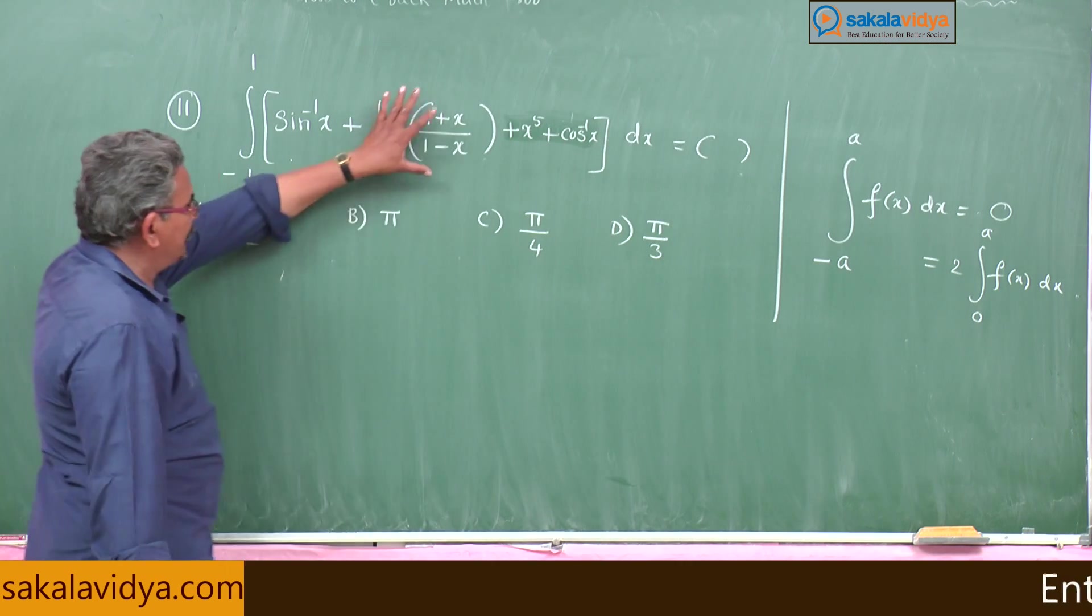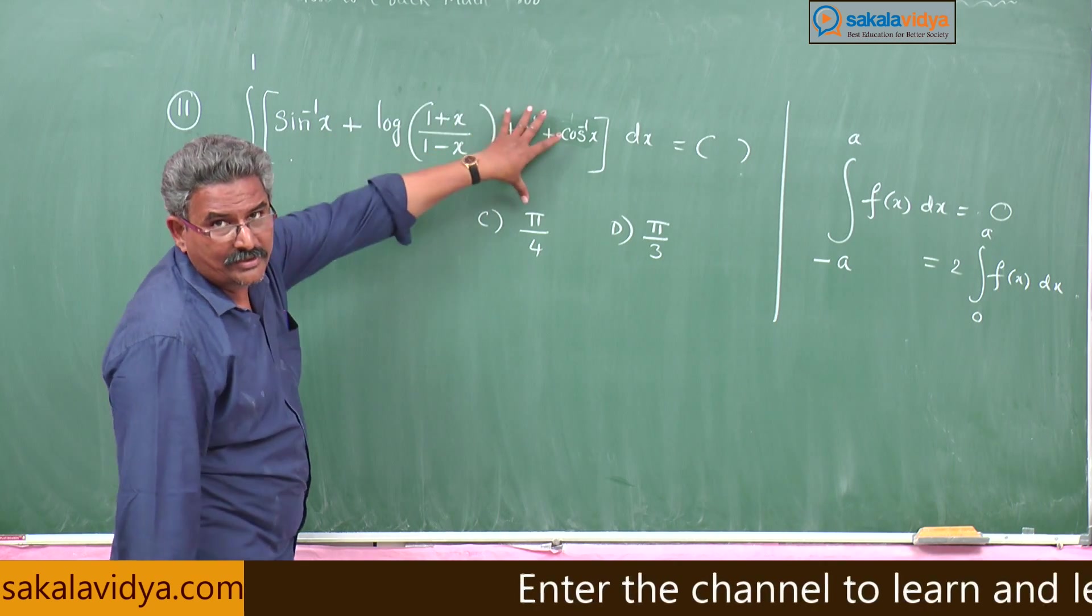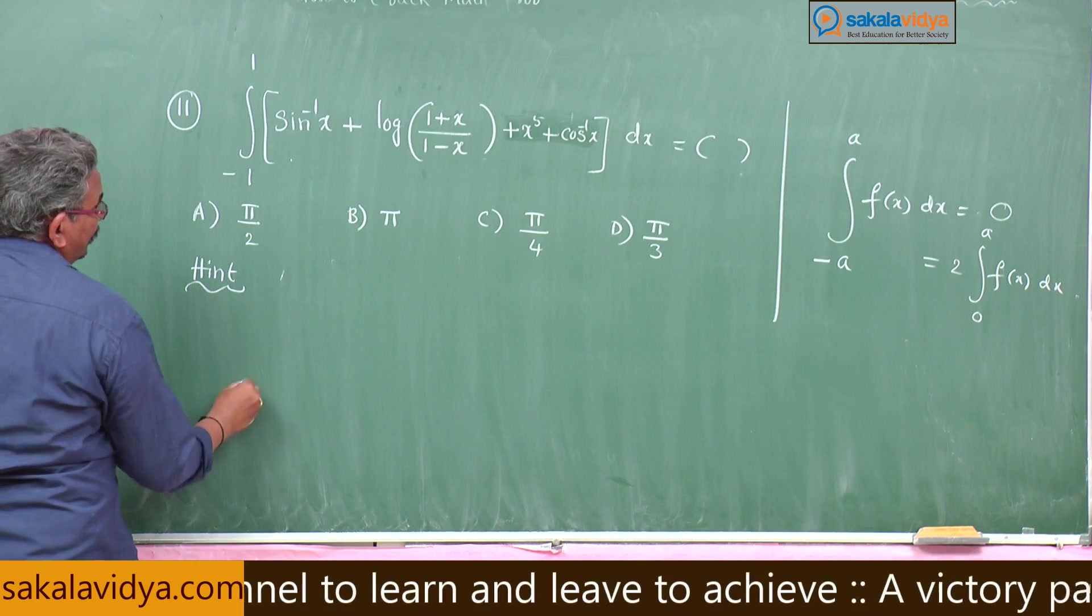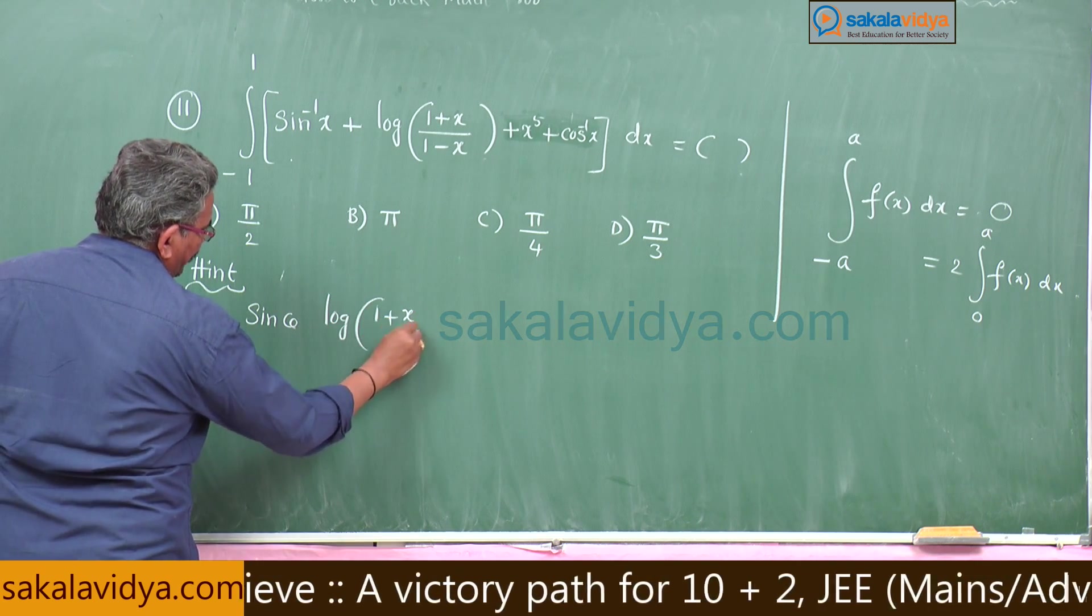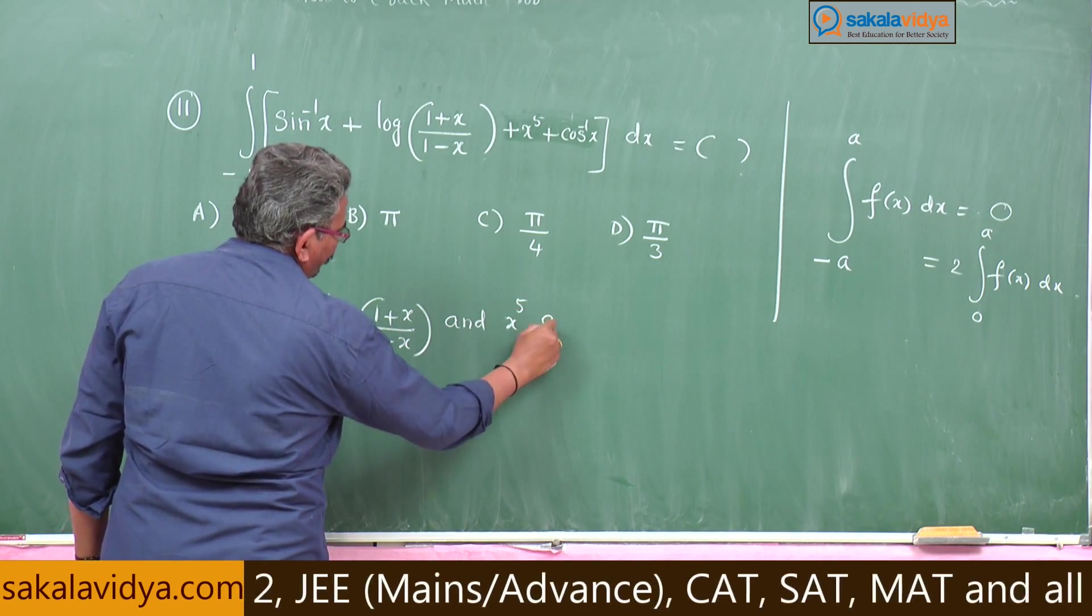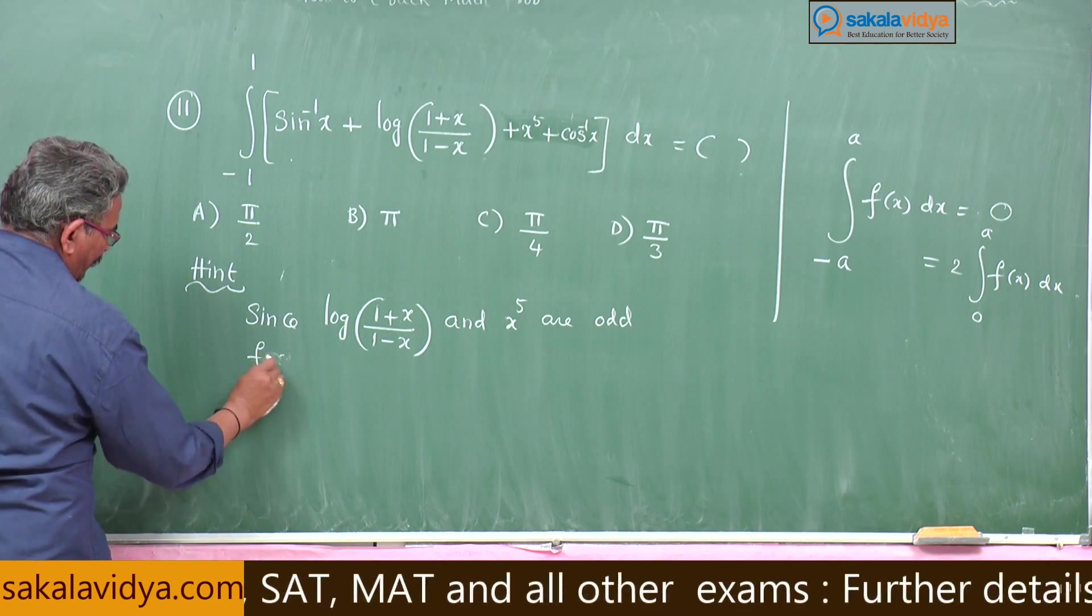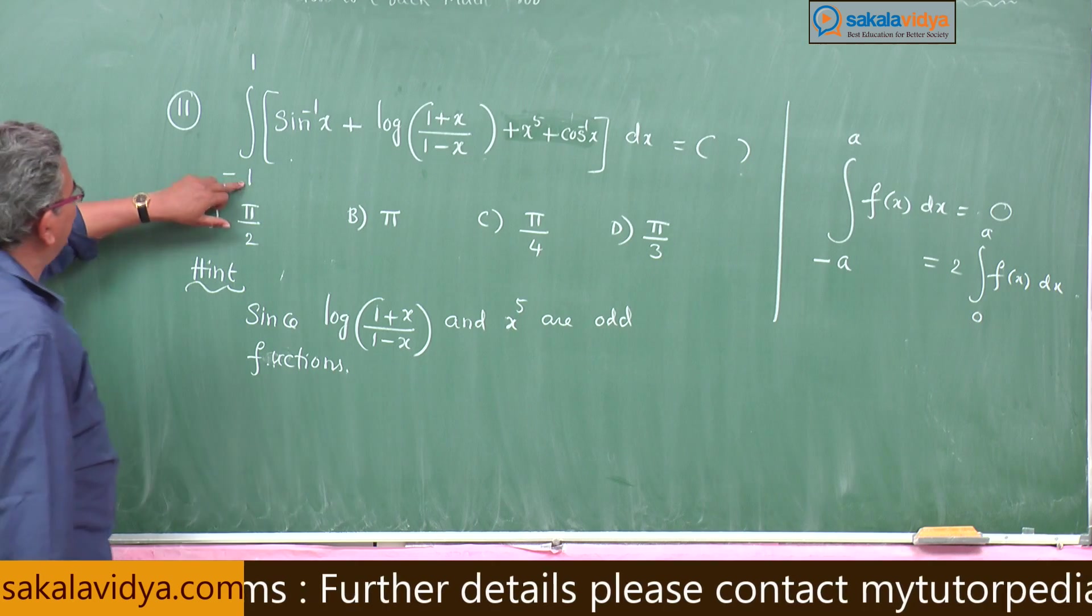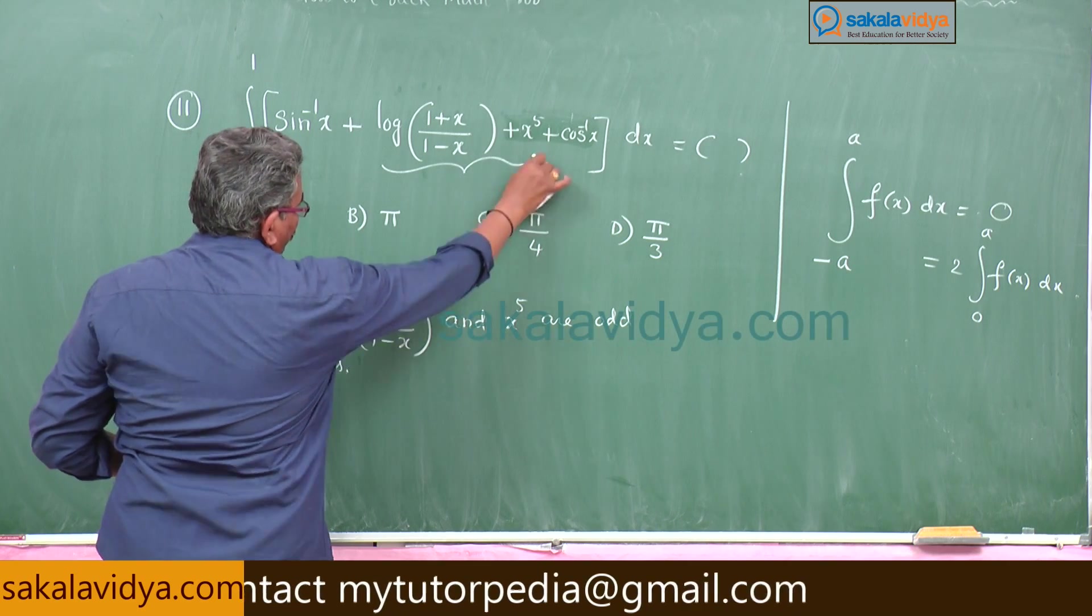Now check these. Log of (1+x)/(1-x) becomes odd function, x to the power of phi is odd function. Since log of (1+x)/(1-x) and x to the power of phi are odd functions, integral minus 1 to 1 equals 0. This becomes 0, leave it.